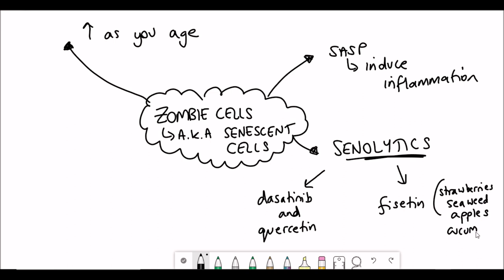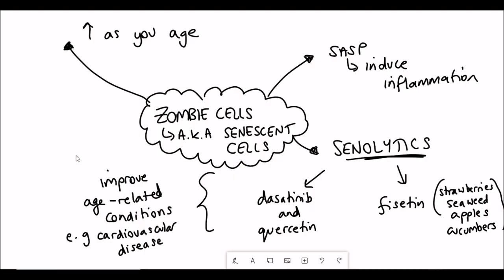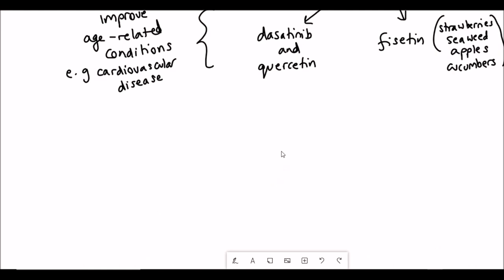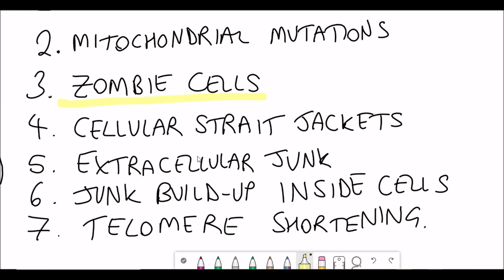Some of these senescent cells have a senescence associated secretory phenotype, the SASP, and that can be pro-inflammatory, which is the link between senescence and aging. He mentions senolytics, which are drugs that basically target senescent cells for destruction. You can have a combination of dasatinib and quercetin or fisetin, which is found in strawberries, seaweeds, apples, and cucumber. By removing these senescent cells you can improve age-related conditions and reduce the risk of cardiovascular disease.